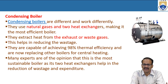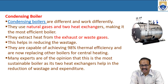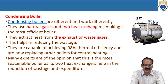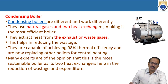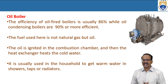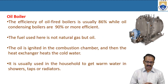The condensing boiler uses two heat exchangers and natural gas, and is able to absorb heat from the flue gases also. That is why the efficiency of this condensing boiler is up to 98%. There is no doubt that this is the most sustainable boiler. The oil boiler comes next with 86% efficiency, using oil rather than natural gas.